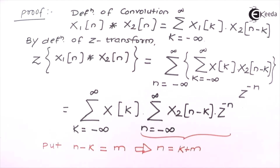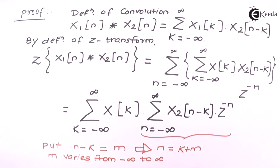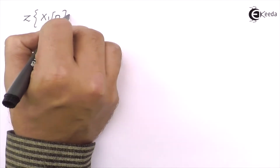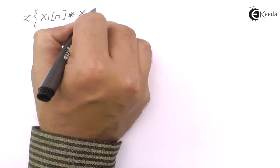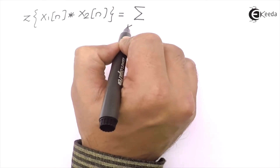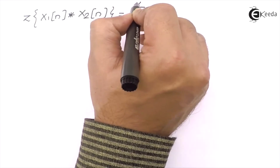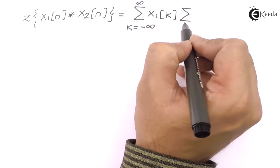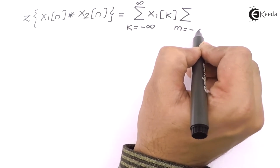Since N minus k equals M, there won't be any change as far as the limits are concerned. Despite changing the index, M still varies from minus infinity to infinity. So let's make these changes. We will get the Z transform of X1[N] convolved with X2[N] as summation k from minus infinity to infinity, and a new variable M from minus infinity to infinity.